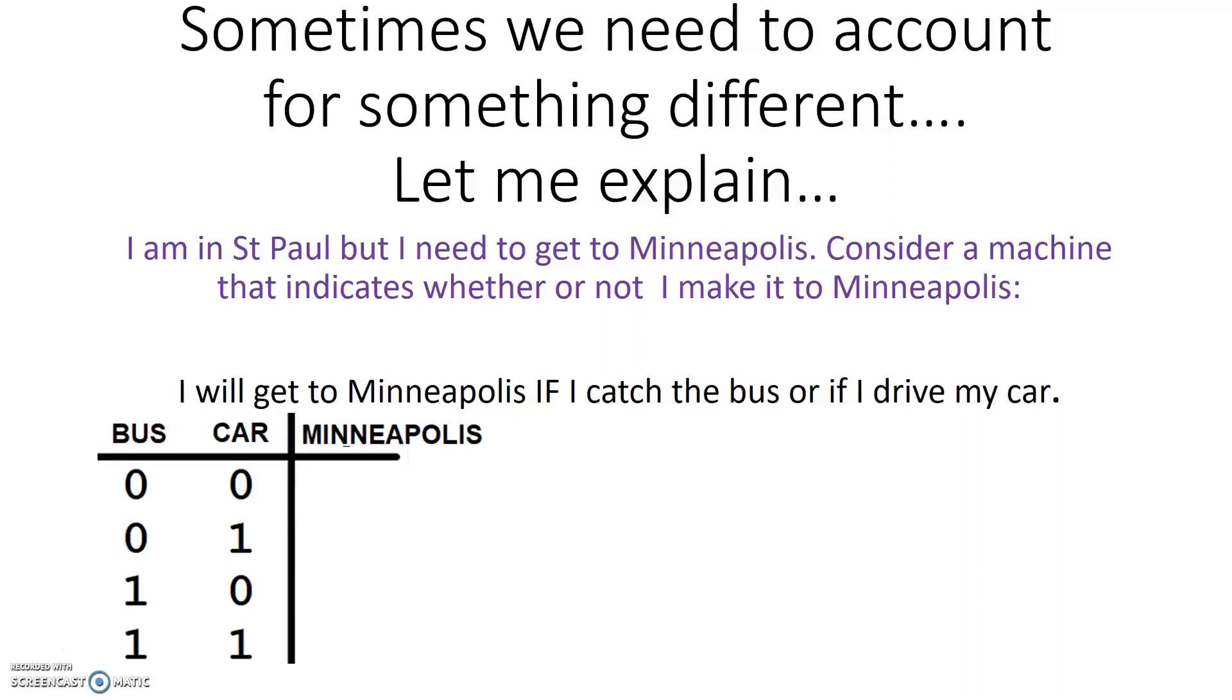And a zero on Minneapolis means I will not make it to Minneapolis, and a one there means I made it to Minneapolis. So, the first row where we have a condition where bus is zero and car is zero, I did not take the bus, and I did not take the car, so there is no way I can make it to Minneapolis, so the output truth table says a zero in Minneapolis.